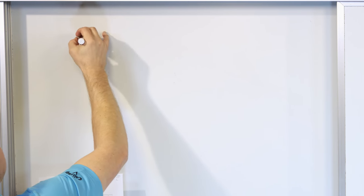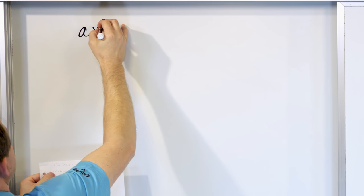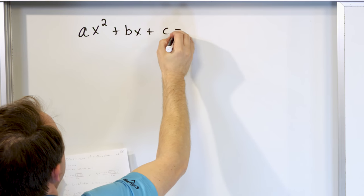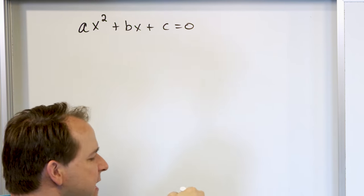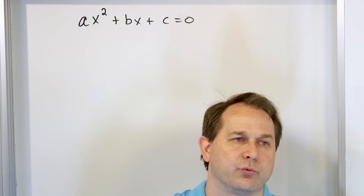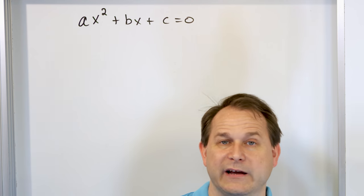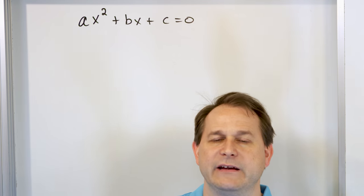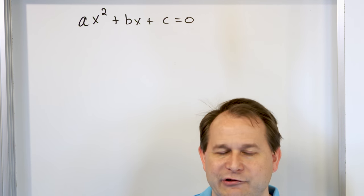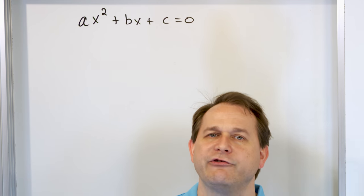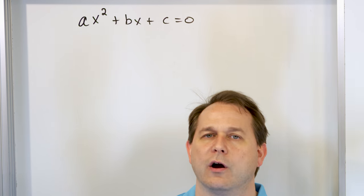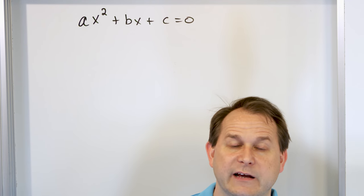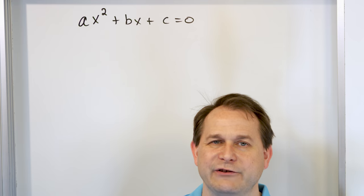So we have any quadratic equation that generally looks like this: Ax squared plus Bx plus C equals zero. By now you know that A, B, and C can be real numbers — they can be square roots, irrational numbers, or even imaginary numbers. But for the purpose of this lesson, we're going to say that A, B, and C are real numbers. They can be negative, positive, fractions, or radicals, but they're definitely just going to be real.